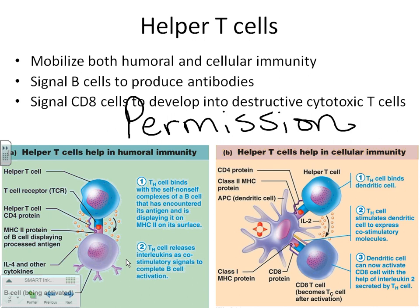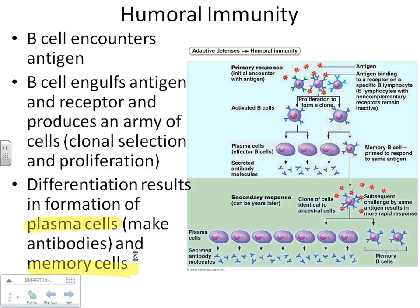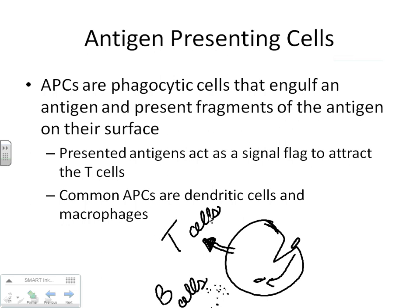How does the TH know? Go back to the antigen-presenting cell — the T cell looks at the piece of antigen the phagocyte found. That's how the TH knows it's something it's supposed to attack — the phagocyte has already broken it down. So TH gives B cells permission.